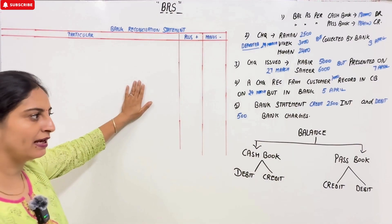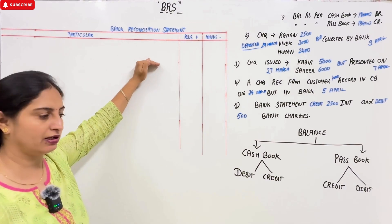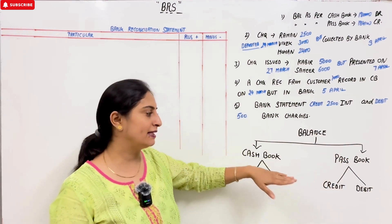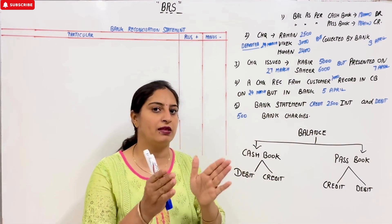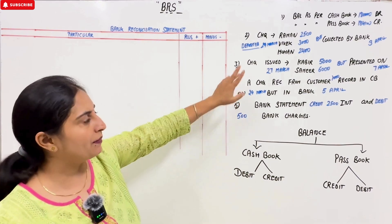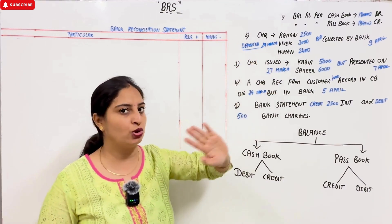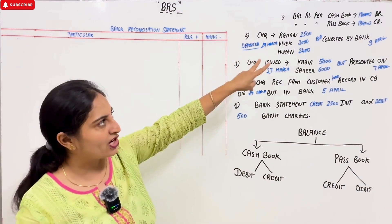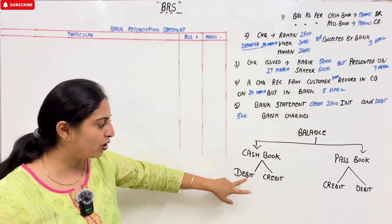Now let's make the BRS. First, we have to decide which balance to start with — the cash book balance or the pass book balance. With whichever balance you start, you then work toward matching the other one. You should know how to give the first balance equation: balance as per cash book and balance as per pass book.